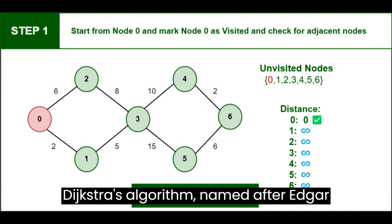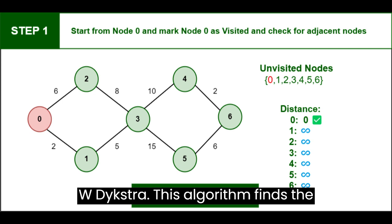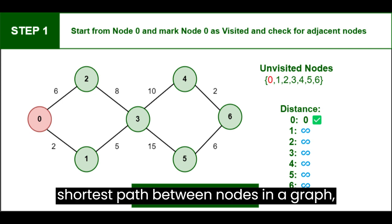Dijkstra's algorithm, named after Edsger W. Dijkstra, this algorithm finds the shortest path between nodes in a graph, making it vital in navigation and network routing protocols.